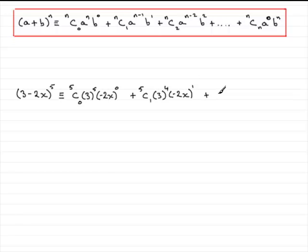And then for the final term, the third term, we've got 5C2. And then a is reduced by 1 more power. So, we've got now 3 to the power 3. And then we increase the b part by 1 power. So, it's minus 2x to the power 2. Don't forget to put plus and so on.